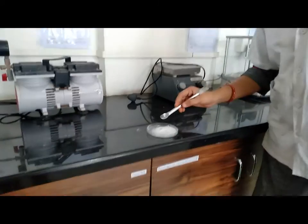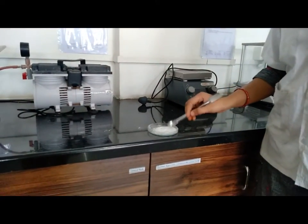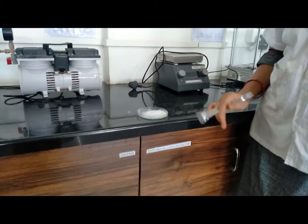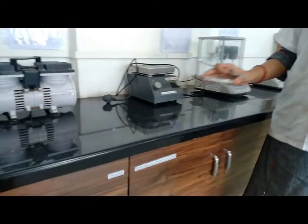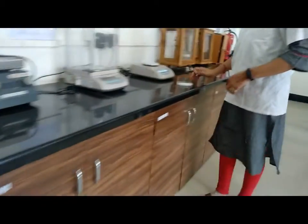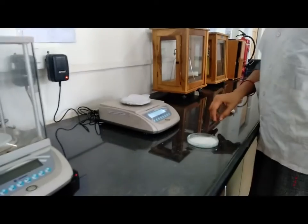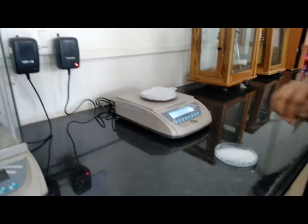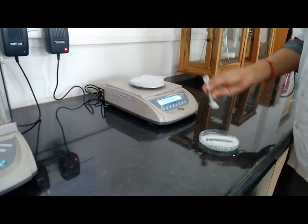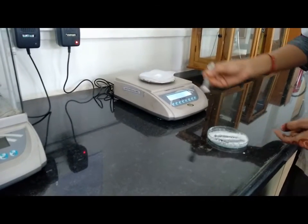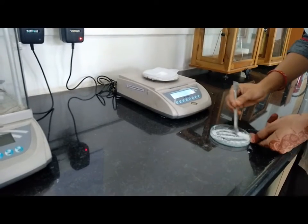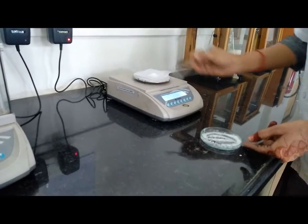After drying at 105 degrees Celsius in the oven, we get such a type of white crystalline powder. Now we have to weigh this powder so that we can calculate the yield.